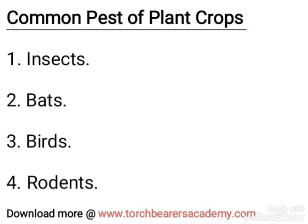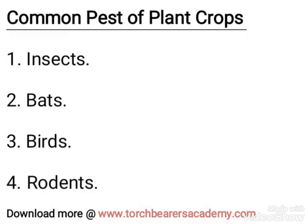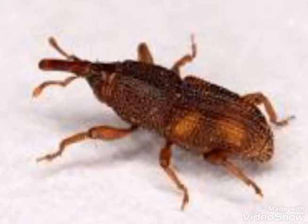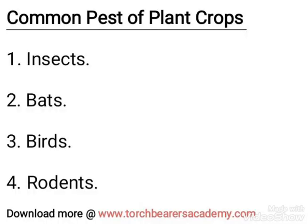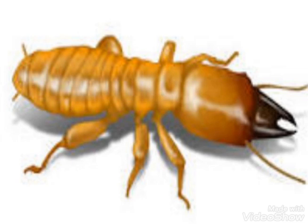Some common pests of plants are: Number one, insects. Insects are tiny animals with six legs and often with wings and mouth parts, which they use for chewing, sucking and boring. Insects damage plants by eating the leaves and grains. Some examples of insects that eat leaves are caterpillars, grasshoppers, beetles and weevils. Examples of insects that suck plant juices are aphids and bugs, while boring insects include red borers. When insects constantly feed on plants, it results in stunted growth and development.